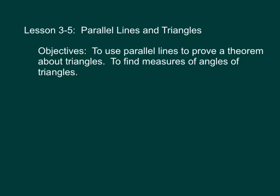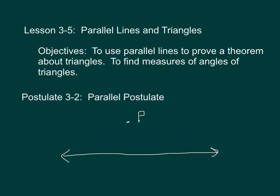The first thing you're going to want to put into your notes is Postulate 3-2, called the Parallel Postulate. The Parallel Postulate says that through a point not on a line, there is one and only one line parallel to the given line. So what we have is a line L and a point P that is not on that line.